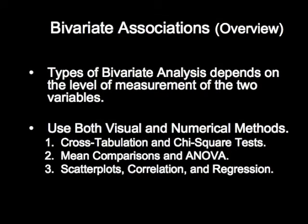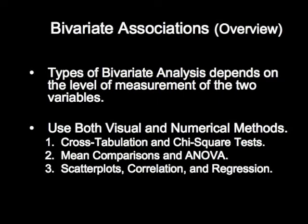When you're looking at the relationship between two variables, you're doing what is called a bivariate analysis, or looking at the bivariate association between two variables. What type of analysis you perform depends on the level of measurement of the variables. So if you have nominal variables, ordinal measured variables, or interval level variables, you're going to have different kinds of bivariate analysis.